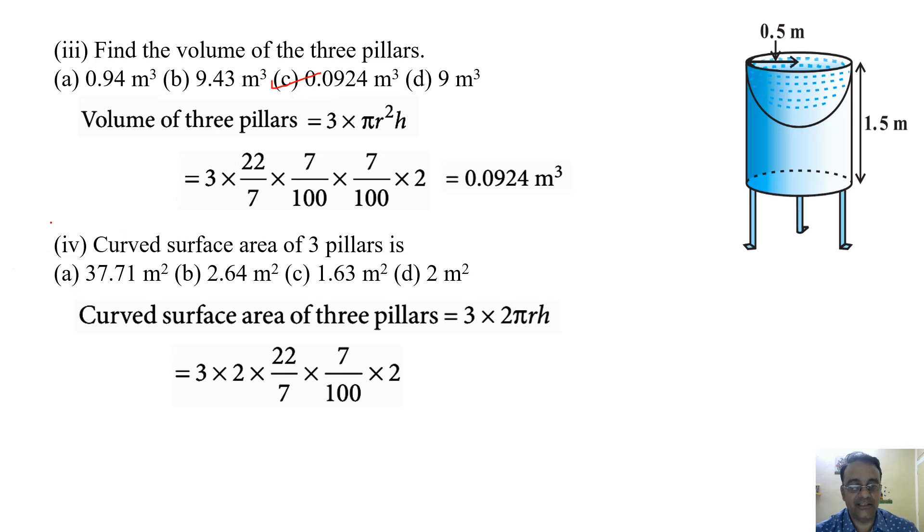7 here we can cancel. For 3 × 2 × 22 × 2, we will get 264 divided by 100, so 2.64 meter square. So correct option is B.